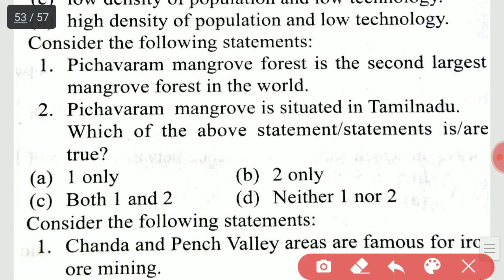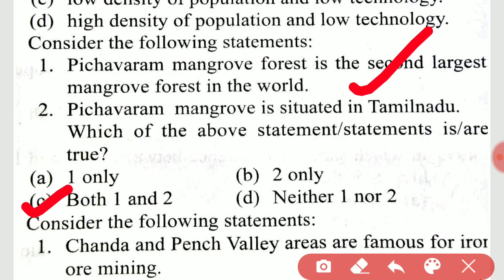Consider the following statements: Pichavaram mangrove forest is the second largest mangrove forest in the world; Pichavaram mangrove is situated in Tamil Nadu. Which of the above statements are correct? It is option C — both statements are correct.